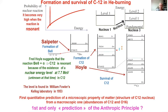It was the first quantitative prediction of a microscopic property of matter — the structure of a nucleus — based on a macroscopic observation: that carbon-12 and oxygen-16 are both abundant in nature. For some people this is the first and only genuine prediction of the anthropic principle, though that remains a matter of discussion. The big problem of how to go from helium to heavier nuclei was thus solved in 1953.